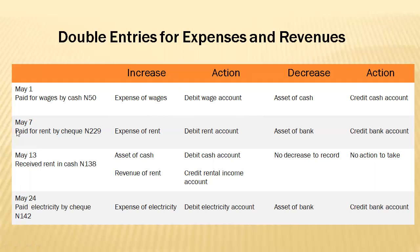On May 7th: paid rent by check. Two accounts are involved — rent account and bank account (check is represented by the bank). Rent is also an expense, so any time we have an increase in an expense account, we debit. Bank account is an asset account; since we are making payments, whatever is in the bank account will reduce, and any time an asset account reduces, we credit. So we debit rent account and credit bank account.